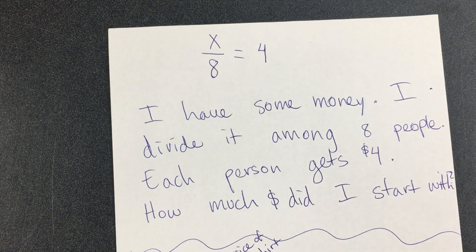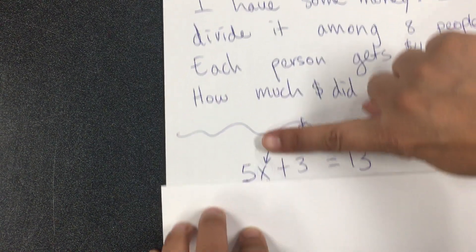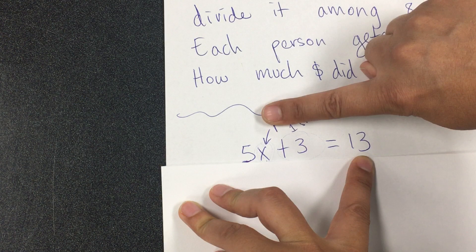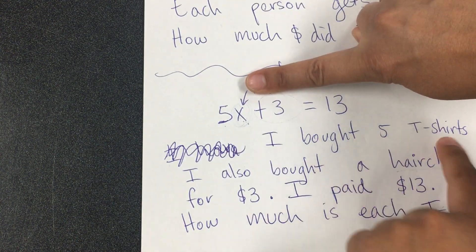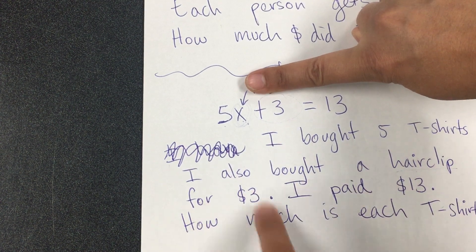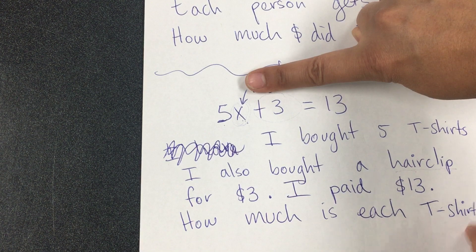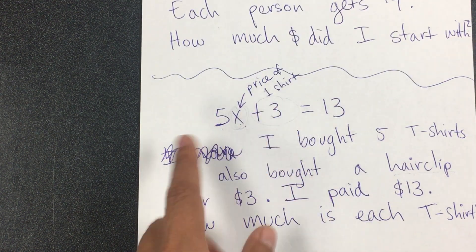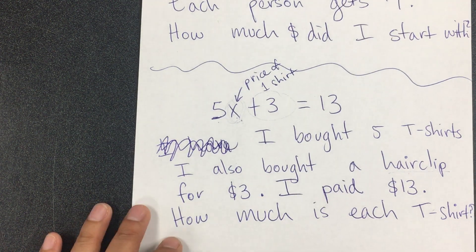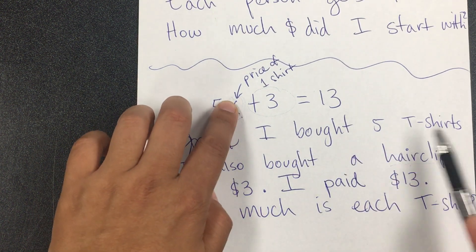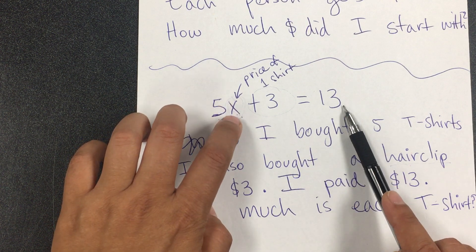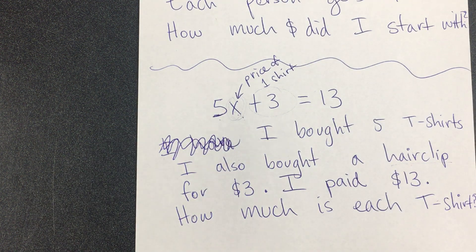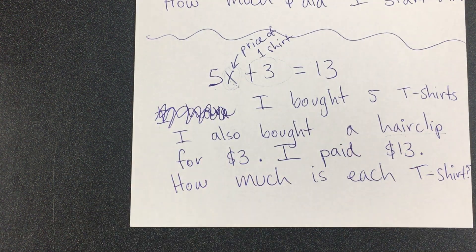Here's another one. I gave students the equation 5x + 3 = 13 and they said: 'I bought five T-shirts. I also bought a hair clip for three dollars. I paid thirteen dollars. How much is each T-shirt?' To solve, subtract 3, leaving 5x = 10. Divide by 5, and each T-shirt is two dollars. Think about whether two dollars per T-shirt makes sense.